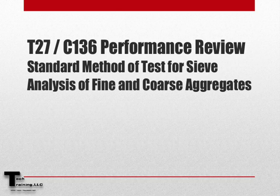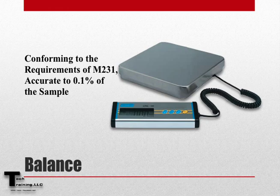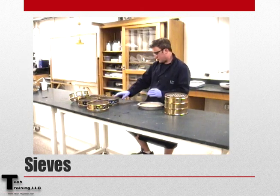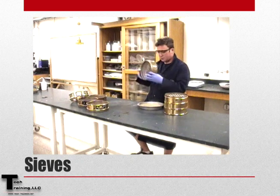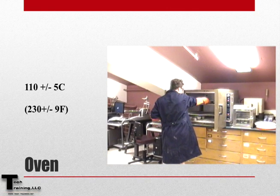Now that we understand the use and application of AASHTO T27 and ASTM C136, let's move on to a detailed performance review. To perform this test, we'll need a balance conforming to M231, which is accurate to 0.1% of the sample. For ASTM, the scale can be accurate to 0.1 grams or 0.1% of the sample. We'll also need the appropriate sieves, as well as an oven with a capable range of 110 ±5 degrees Celsius.